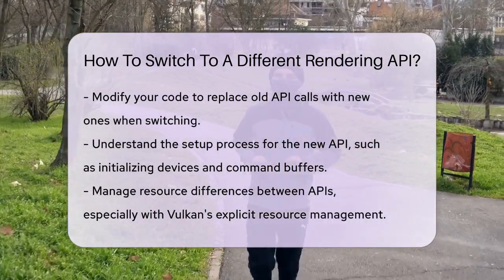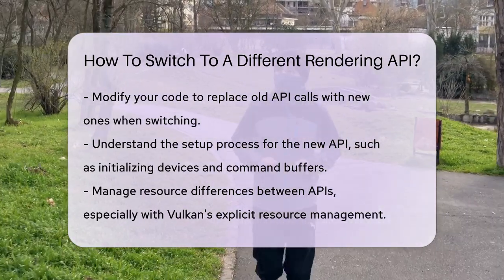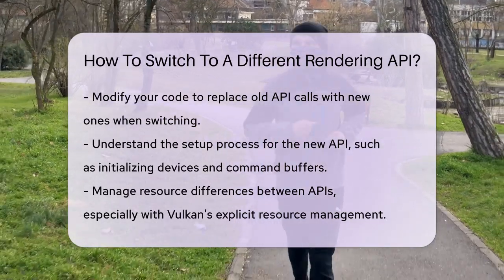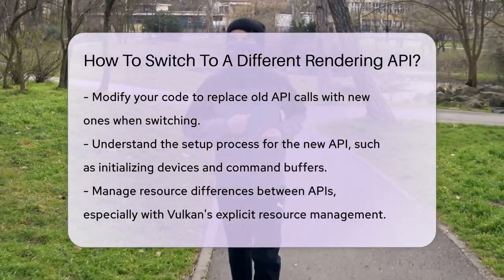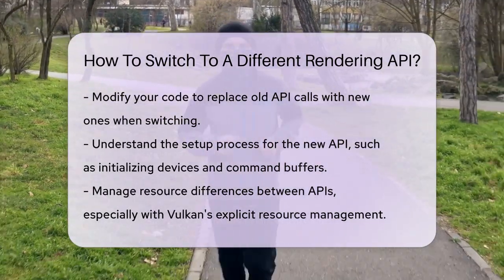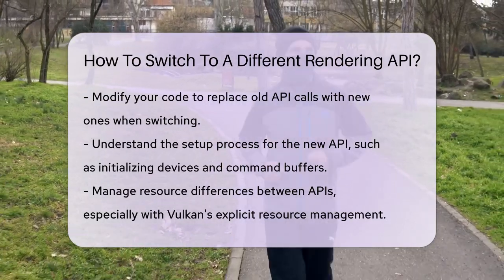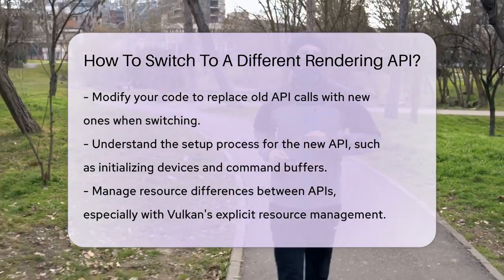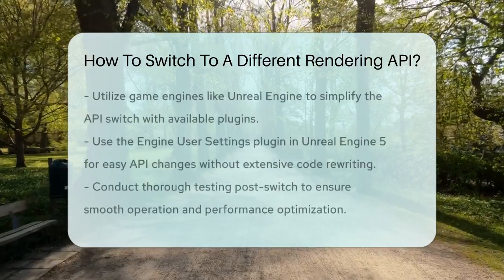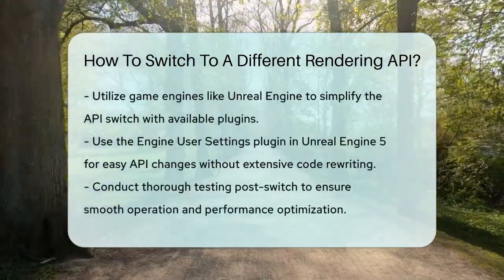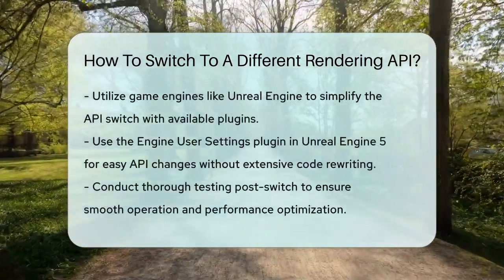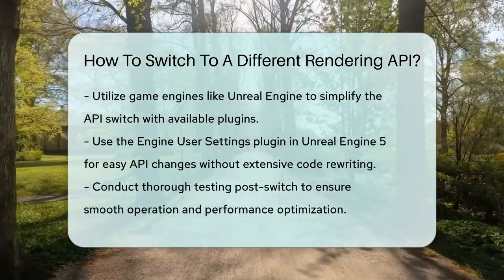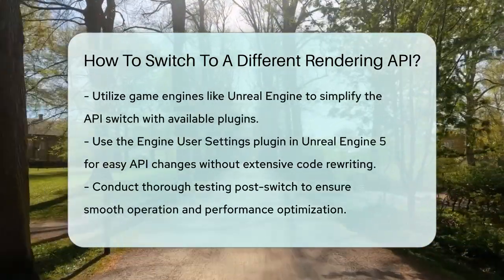If you're using a game engine like Unreal Engine, things can be a bit easier. There are plugins and tools available that allow you to switch between different APIs without rewriting all your code. For example, the Engine User Settings plugin for Unreal Engine 5 lets you change the graphics API between DirectX 11, DirectX 12, and Vulkan right from the engine settings.